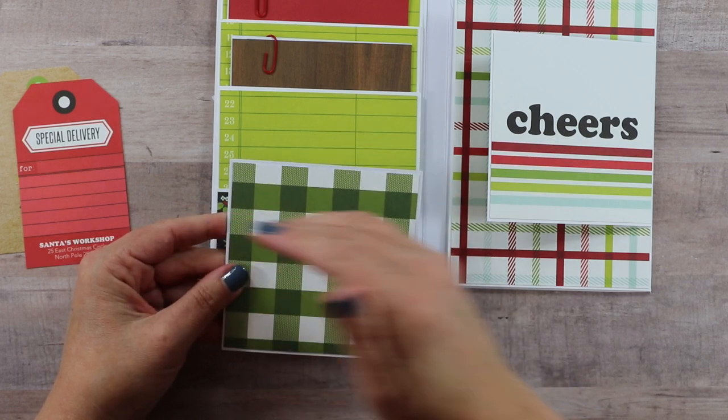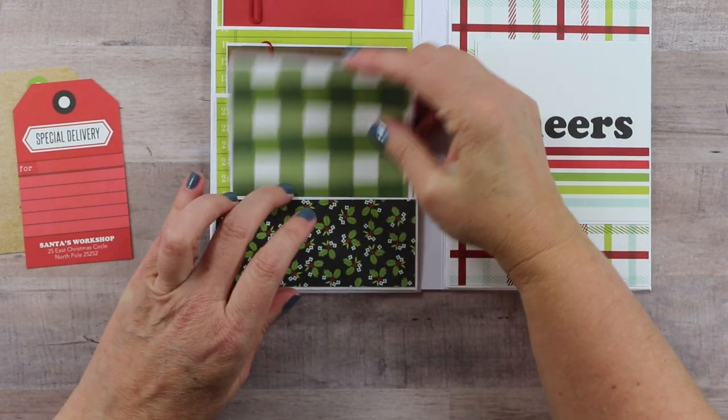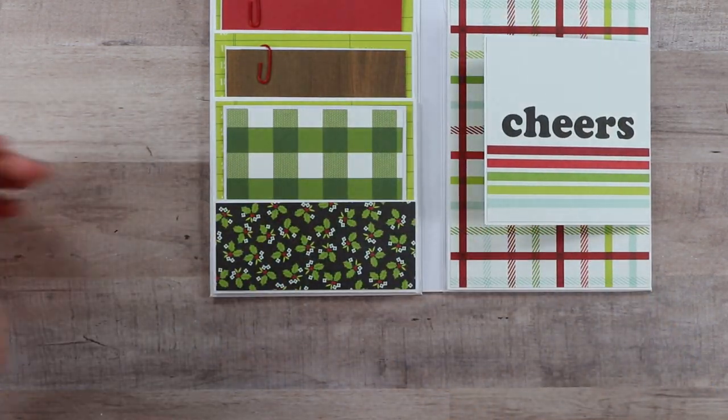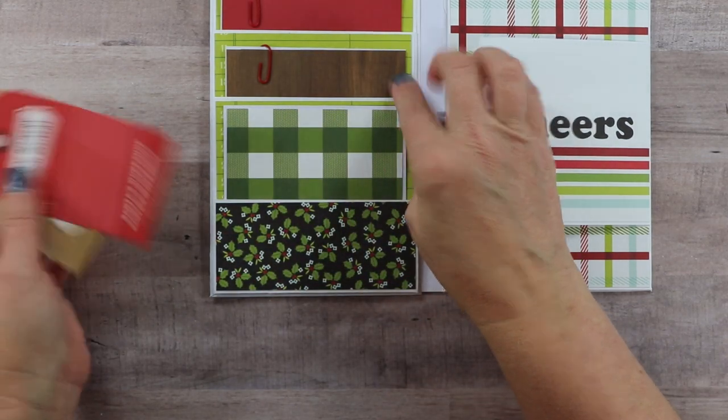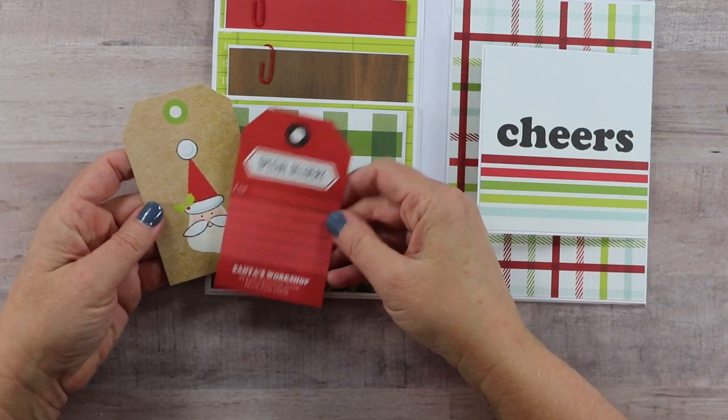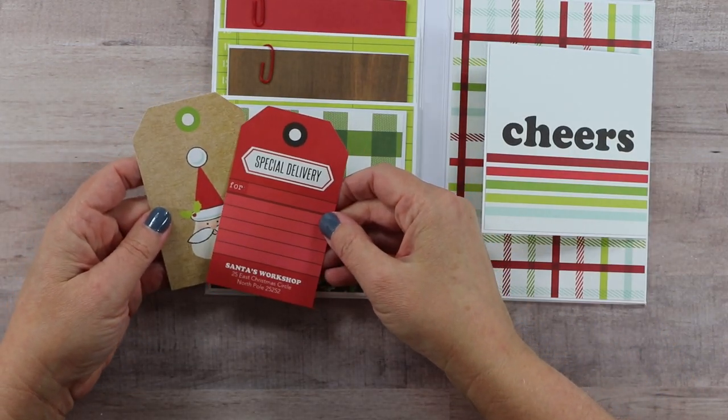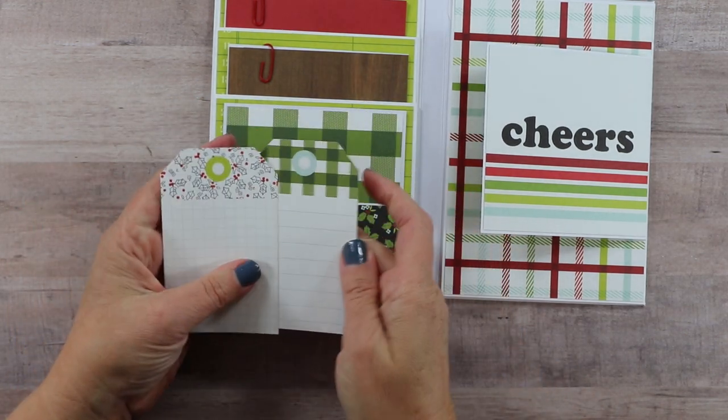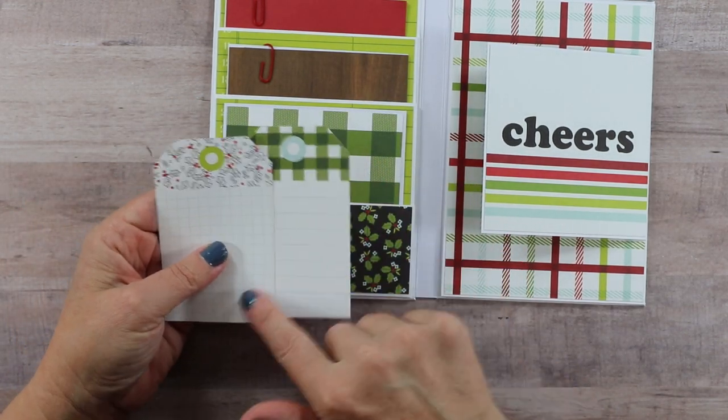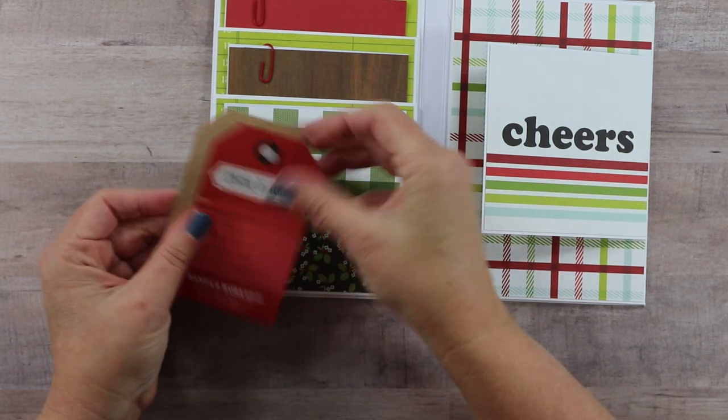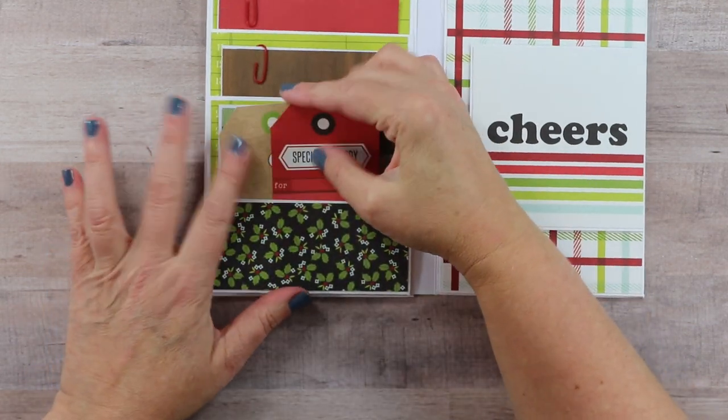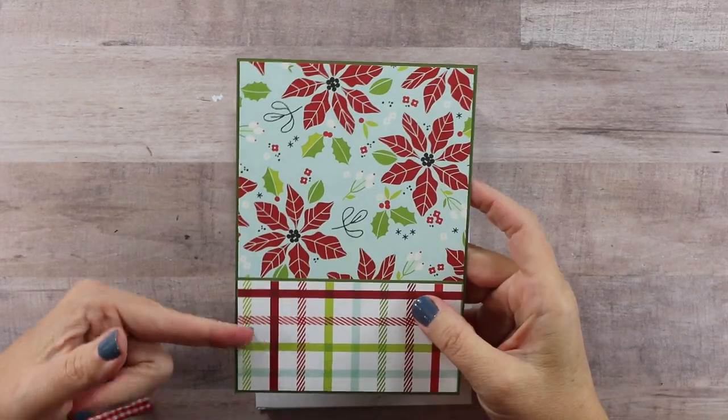The last one is going to be a cardstock measurement of four high by four wide, and the pattern paper is three and seven-eighths by three and seven-eighths. I'm not going to clip a large cut-apart on that. We're just going to include a couple of the tags from the collection. So I just picked ones that I thought would match, and they're a great place to add journaling on the back as well because there are lines. So we'll just tuck those in.